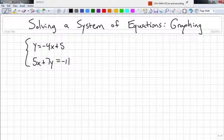So actually in this problem we do have an equation that one is in slope intercept form, the other is not. So we need to go and rewrite 5x plus 7y equals negative 11.